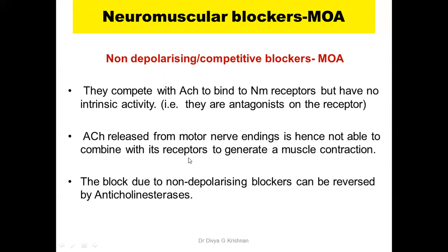Is there a way to reverse the blockade produced by the neuromuscular blocker? You can give anticholinesterases — drugs which inhibit the cholinesterase enzyme and increase the concentration of acetylcholine. Once the concentration of the natural transmitter is increased, it can push off the blocker and reverse the relaxation produced by the neuromuscular blocker. The block can be reversed by anticholinesterases.